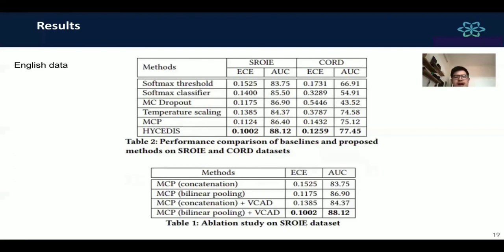The next result is our evaluation on public datasets, which are SROIE and CORD. As you can see, in the public datasets, our multi-modal conformal predictor achieves results similar to HYCEDIS scores. When we compare multi-modal conformal predictor with variational anomaly predictor, which is called HYCEDIS, our model achieves state of the art compared with previous methods, which is about 2% and 3% improvement in AUC score and about 0.001 improvement in ECE score.